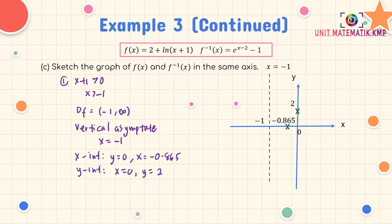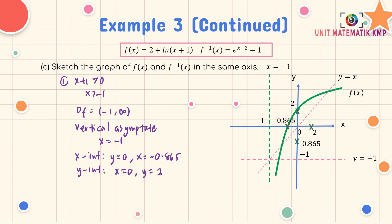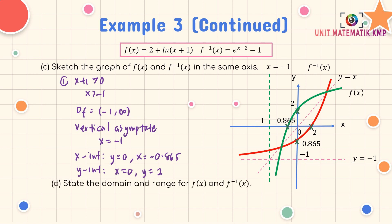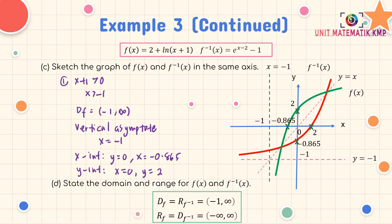Draw the straight line y = x and reflect all points and the asymptote. For f⁻¹, it has a horizontal asymptote at y = −1. The intercepts swap: 2 is now on the x-axis and −0.865 on the y-axis. Sketch the curve for f⁻¹(x). Domain of f equals range of f⁻¹: from −1 to infinity. Range of f equals domain of f⁻¹: all real numbers, negative infinity to infinity.